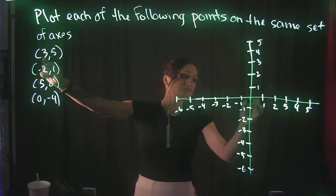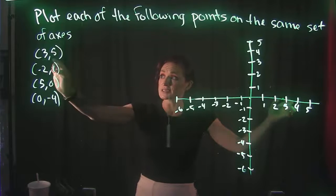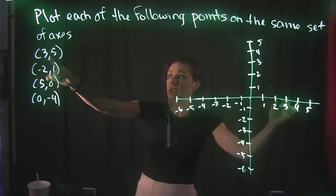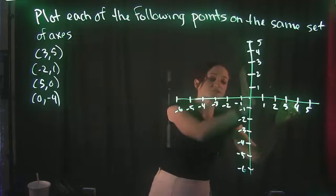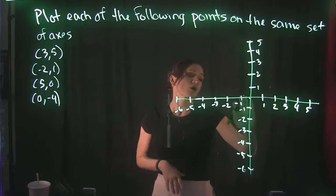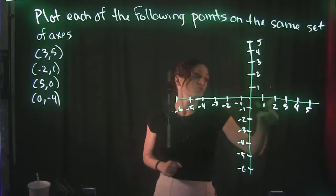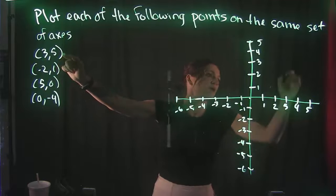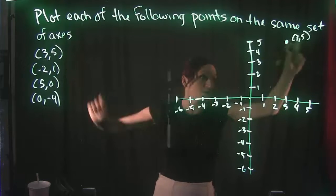So that's a positive 3, so we're going to go to the right 3. And we don't put our point yet. We need to take into consideration the y. So after we go positive 3, we then need to go positive 5 in the y direction. This is our y axis right over here—it's our up and down. So we start with our x, our left and right, and then we go up and down. So positive 3, positive 5. To the right 3, and then up 5. And that's what the point looks like.